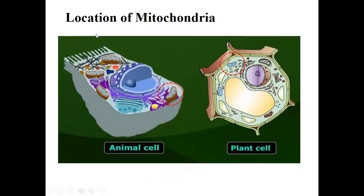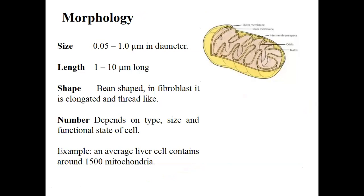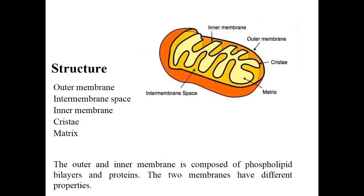Location: mitochondria are present in the cytoplasm — as seen in animal cells and plant cells. Morphology: mitochondria are 0.05 to 1 micrometer in diameter. Their length depends on quality and health, usually from 1 to 10 micrometers long. In fibroblasts they are elongated and thread-like; normally they are bean-shaped. The number of mitochondria depends on the needs of the cell — an average liver cell contains approximately 1500 mitochondria.